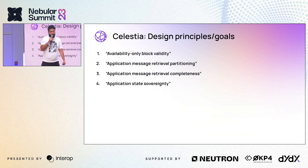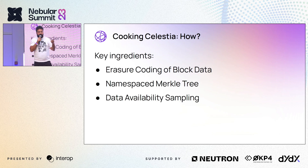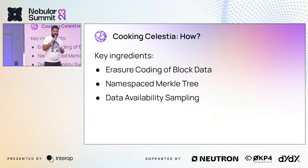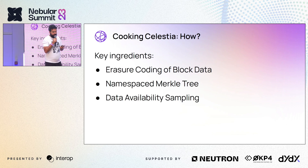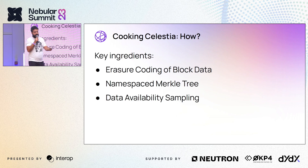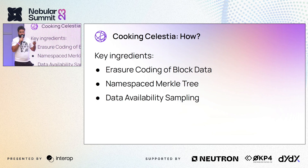How did we achieve this? There are mainly three ingredients. First, we erasure code the block data. Erasure coding is a technique most people are familiar with — when you scan a QR code, erasure coding is implied so if something is missing you still reach the website; if a CD is scratched you can still listen to the music. The second ingredient is how we commit to the data using a namespace Merkle tree. The third ingredient is data availability sampling. These three things basically transform a vanilla Cosmos chain into Celestia.